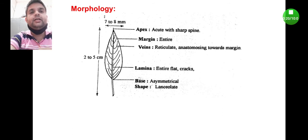The apex, the topmost part, is acute with sharp spine. At the topmost part, the presence of sharp spine can be observed. The margin is entire. The veins are reticulate, meaning you can see left and right the veins arranged one by one.